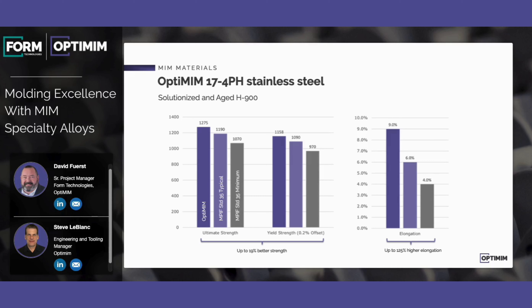Before we get into details of some specialty alloys, I'd like to mention our materials properties in general. This graphic shows bar charts of mechanical properties of our 17-4 stainless steel. These bars represent actual properties from our industry federation, collected from coupons sent in by federation members and then reported.